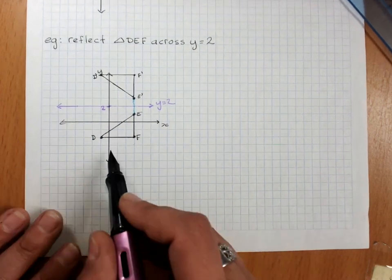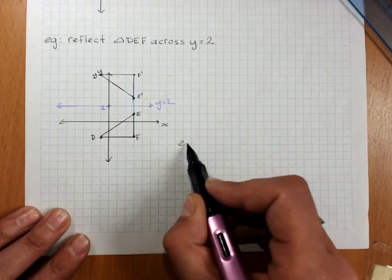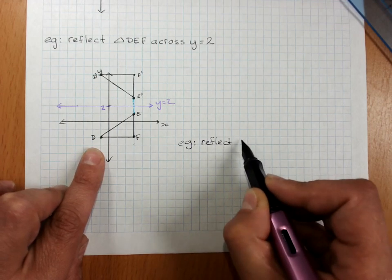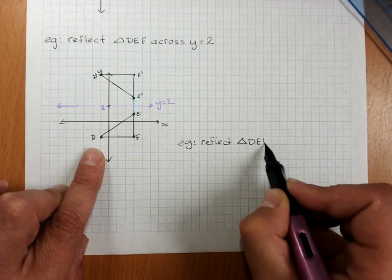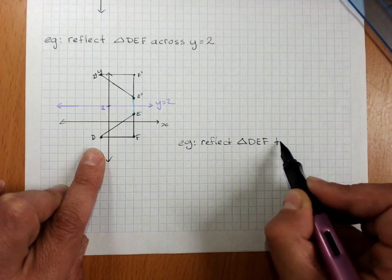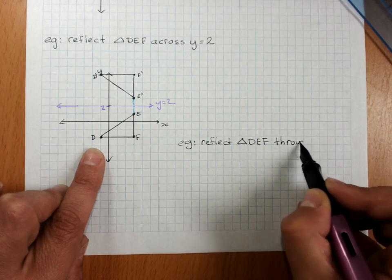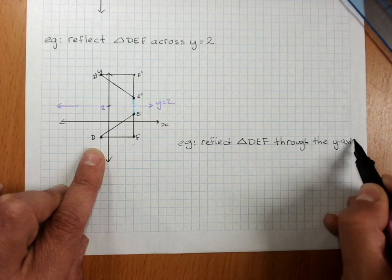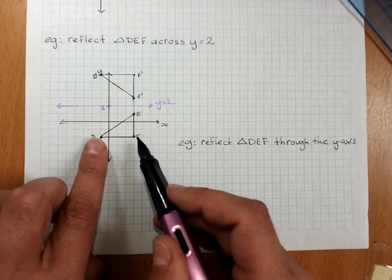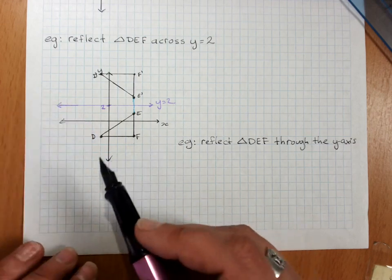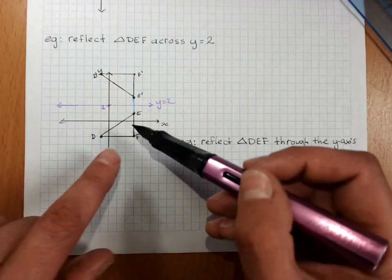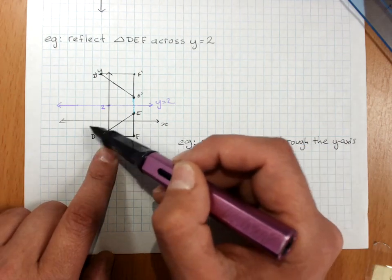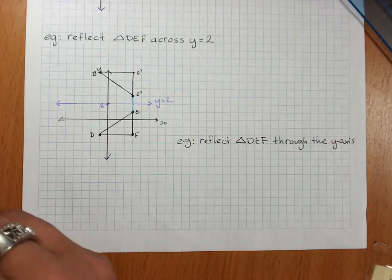So imagine if I had to reflect DEF through or across the Y axis. It would flip this way. And because E and F are on this side of the Y axis and D is on that side, they'd end up the other way around.